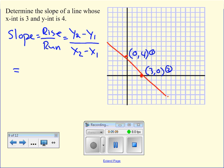So my y2 is going to be zero and my y1 will be four. So I have zero subtract four. And then I have my x2 is three and my x1 is zero. So I'm going to get negative four over three.